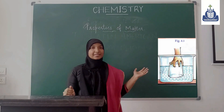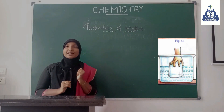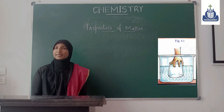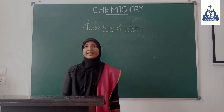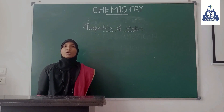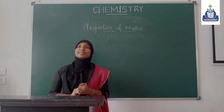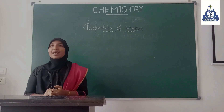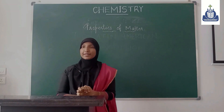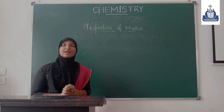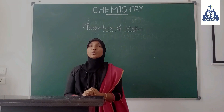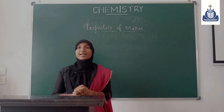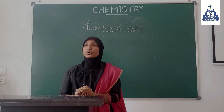What happens to the water level in the trough? The water level increases. Does the water enter the tumbler? No. Which material does the tumbler already contain? Air. Is there a relationship between the volume of this material and the difference in water level? Yes. The increase in water level becomes equal to the volume of the tumbler.